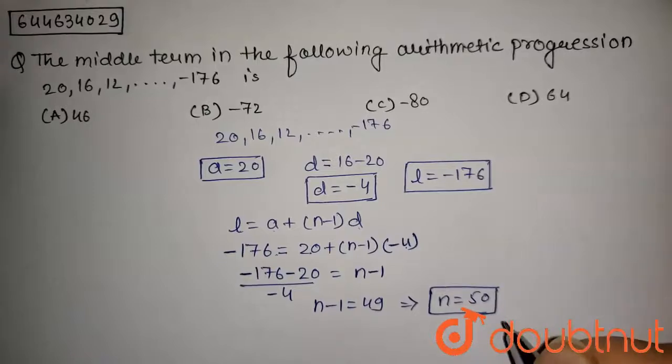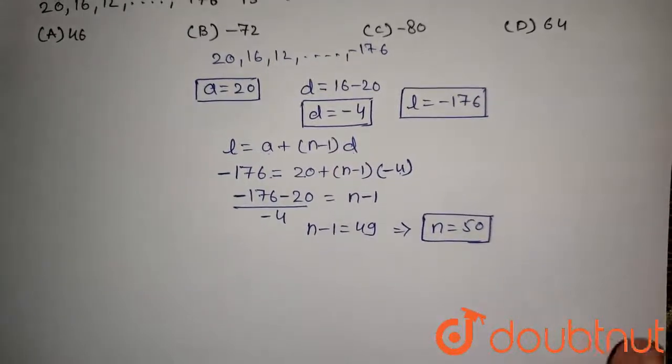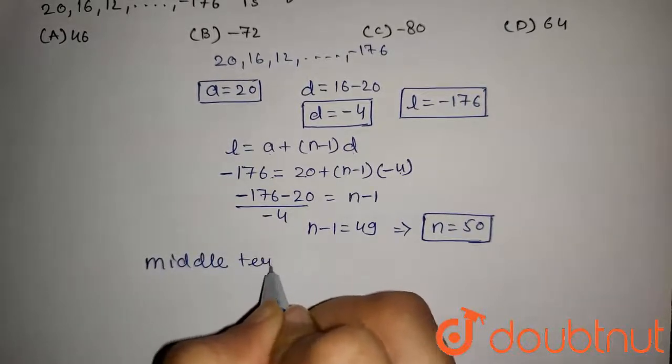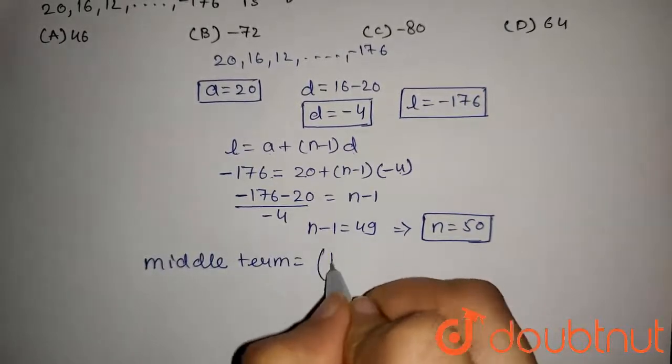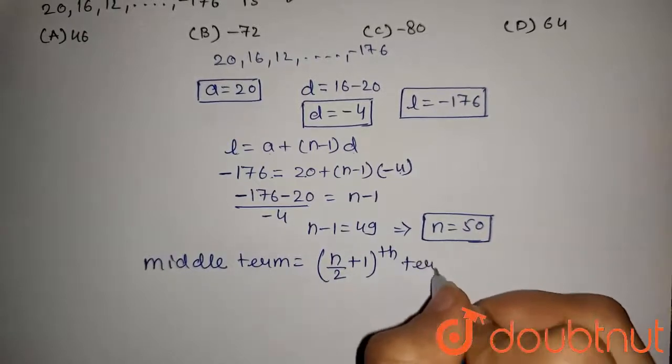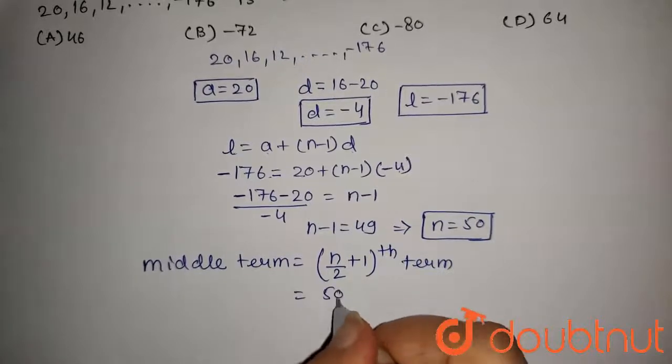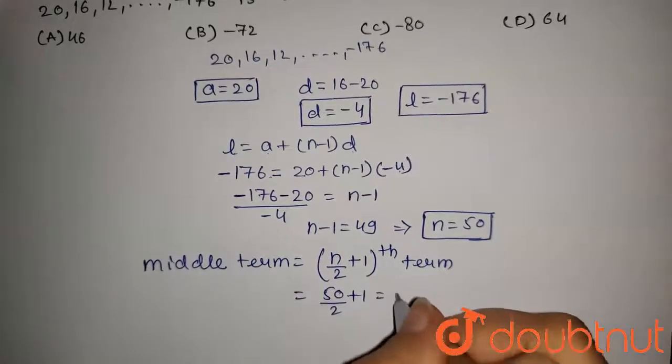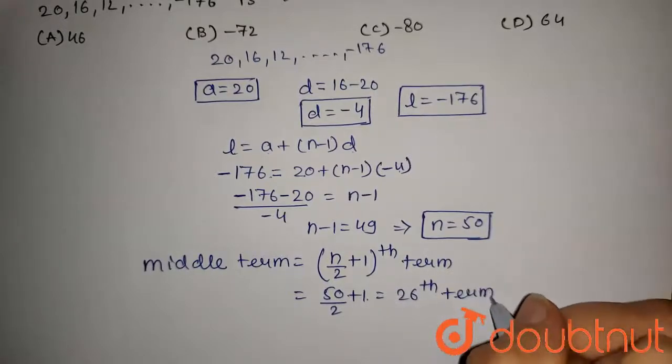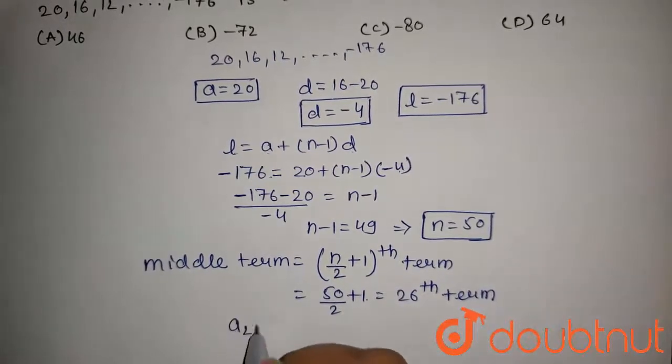Now as there are even terms in this AP, so the middle term of this AP will be (n/2 + 1)th term, that is 25 + 1, that is the 26th term of this AP will be the middle term.